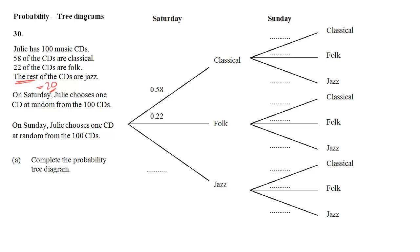Now on Saturday she chooses one CD at random. On Sunday she chooses one CD at random again from 100 CDs. So this is sampling with replacement. The probabilities don't change from one day to the other. So on day one it's 0.2 probability that she chooses jazz because it's 20 out of 100. On day two the three probabilities are exactly the same, so 0.58, 0.22 and 0.20. The middle branch and the bottom branch are filled in exactly the same way.